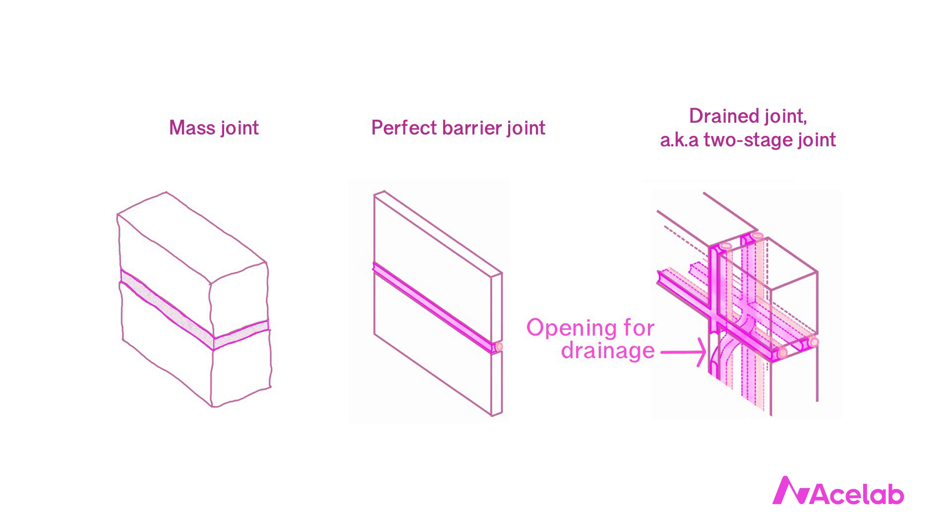All three approaches to water management at building joints work — it's just a question of how appropriate each one is in a given context. When that context is windows in North American framed construction, the best approach is nearly always the drained approach. We typically call this the two-stage seal when talking about windows, although it's also called a drained or weeped system.